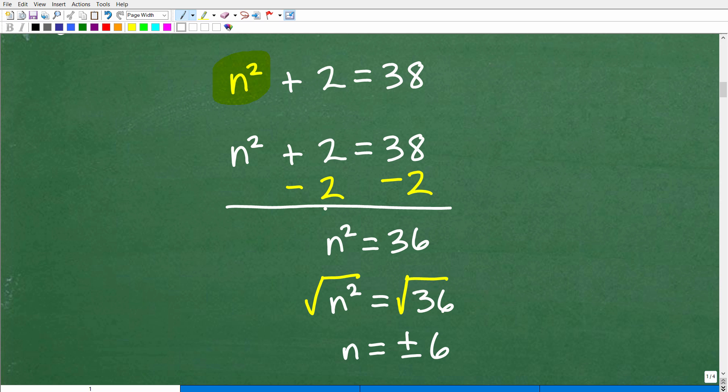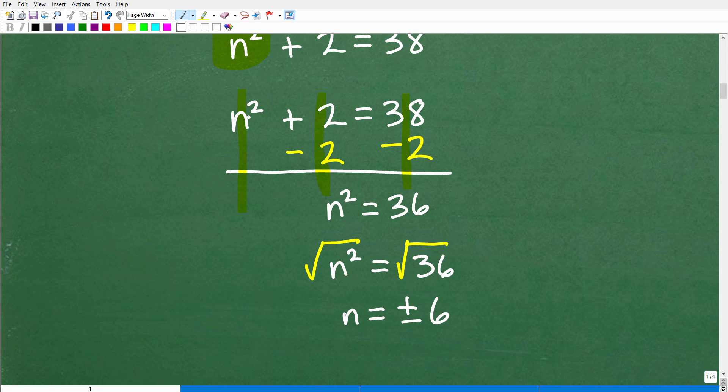What we want to do is get the n² all by itself on one side of the equation. If I had n + 2 = 38, you would subtract 2 from both sides. Here, you're solving for n², so we're going to do the same thing. We're going to subtract 2 from both sides of the equation. If all of this is overwhelming, then you need to work on equations. Check out my pre-algebra course or my algebra course if you really want to learn this stuff. So I'm going to subtract 2 from both sides. Now I have n² = 36.